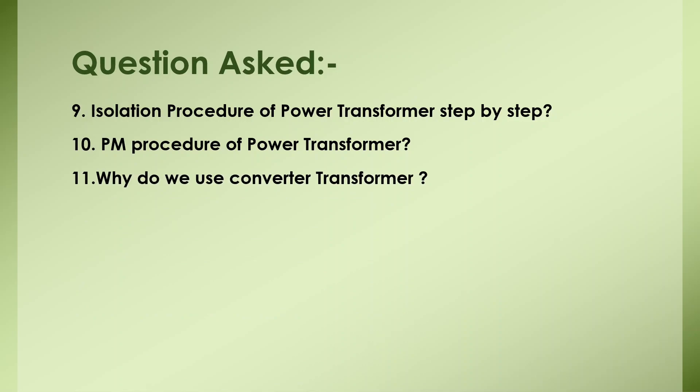Why do we use converter transformers? In my case, we use converter transformers in VFDs — we have a seven-winding converter transformer: one primary and six secondary windings, to feed a VFD having 36 pulses. We use converter transformers to reduce harmonics in the power system and to withstand DC voltage and currents.